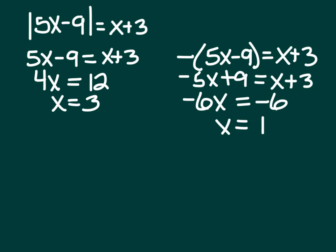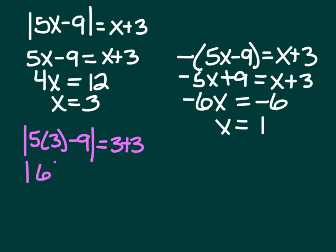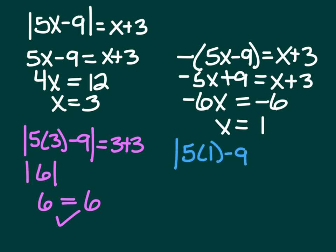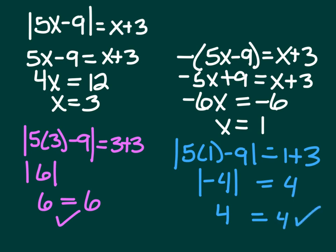Checking x equals 3: the absolute value of 5 times 3 minus 9 should equal 3 plus 3. 5 times 3 is 15; 15 minus 9 is 6; absolute value of 6 is 6; and 3 plus 3 is 6. It works. Checking x equals 1: the absolute value of 5 times 1 minus 9 equals 1 plus 3. 5 minus 9 is negative 4; absolute value of negative 4 is 4; and 4 equals 4. Both solutions check out: x equals 3 and x equals 1.